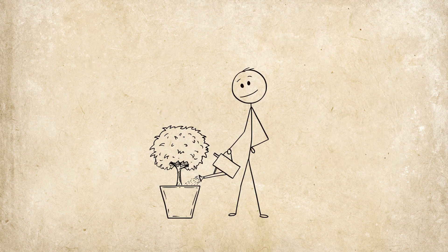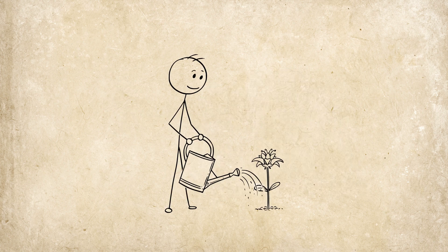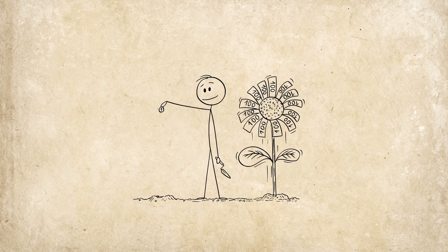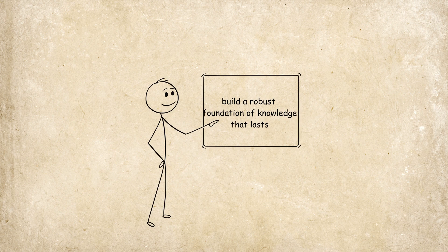Think of it like watering a plant. You don't dump a month's worth of water on it at once. You give it just enough at the right time to keep it thriving. This is how Japanese students avoid last-minute cramming and build a robust foundation of knowledge that lasts.